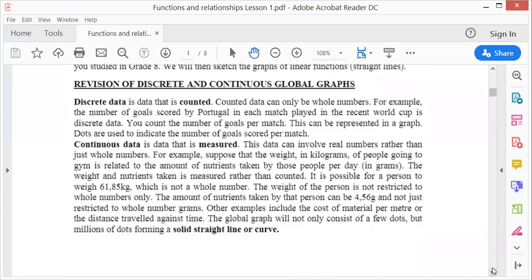Let's first talk about when a graph is discrete versus continuous. A graph is discrete when your data can be counted. Counted data can only be whole numbers. For example, the number of goals scored by Portugal in each match is discrete. You count the goals per match. This can be represented in a graph using dots.